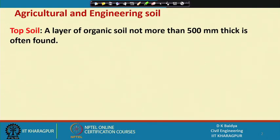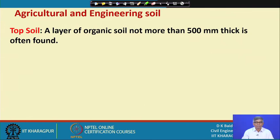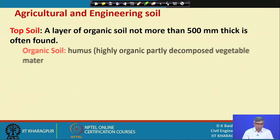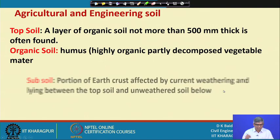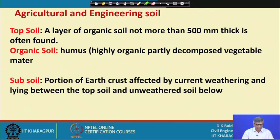Initially we will look at agricultural and engineering soil in general. If you look at a site, every site will have a layer of organic soil not more than 500 millimeters thick, and that is considered as topsoil. This topsoil mostly will have humus, that is decomposed vegetable matter. After that we will have subsoil, which is actually the portion of the earth's crust affected by current weathering and lying between the topsoil and unweathered soil below.